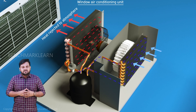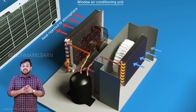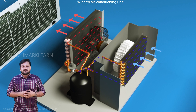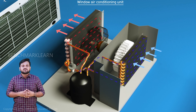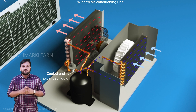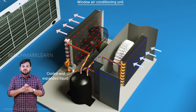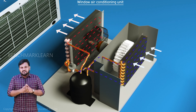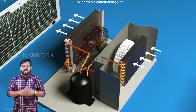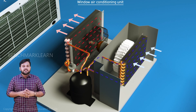A fan situated just outside the condenser facilitates the heat rejection. The cooled liquid expands through the expansion valve situated towards the middle of the whole system and flows to the evaporator. This cycle repeats again and again until the required temperature is attained in the room.